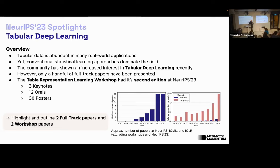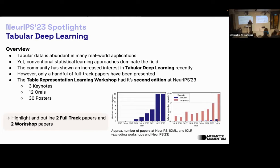The tabular domain is still mostly considered dominated by statistical methods such as gradient boosted trees. It's interesting to observe the community halfway in that paradigm, arguing that gradient boosted trees are the go-to solution, while others like Frank Hutter in Freiburg are pushing more into deep learning for tabular data. He'll highlight two full-track papers and two workshop papers from the table representation learning workshop, which had its second edition at NeurIPS.